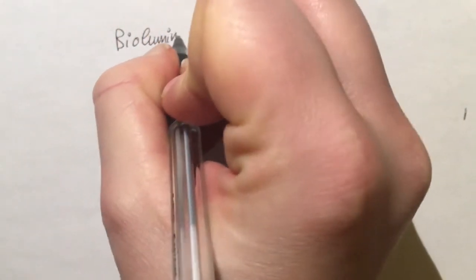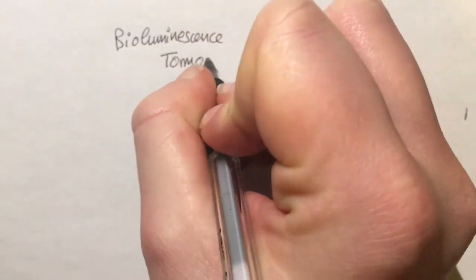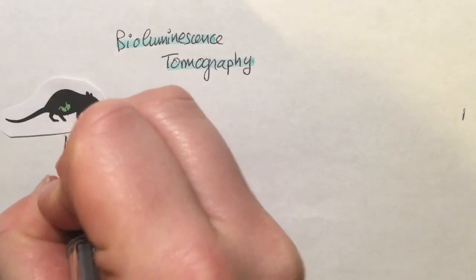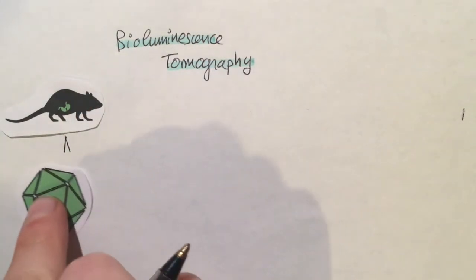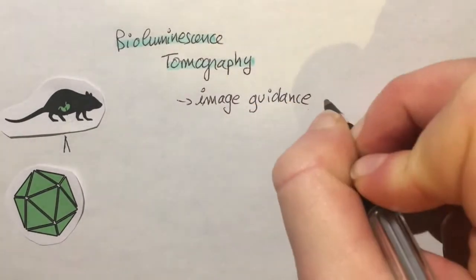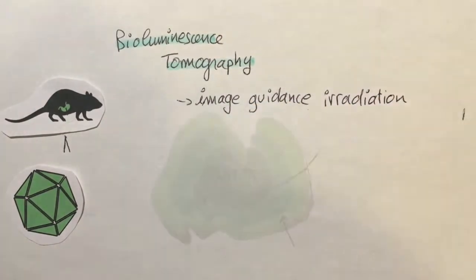An imaging technique deriving from it is BLT, bioluminescence tomography. Tomography is used to reconstruct three-dimensional objects, for example organs or tumors, and it has an application in radiotherapy for image guidance irradiation.